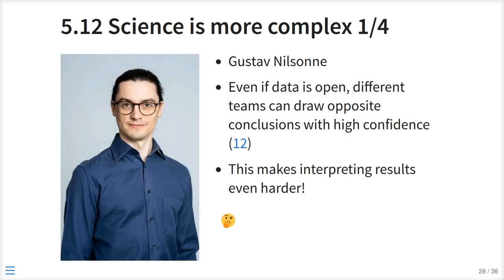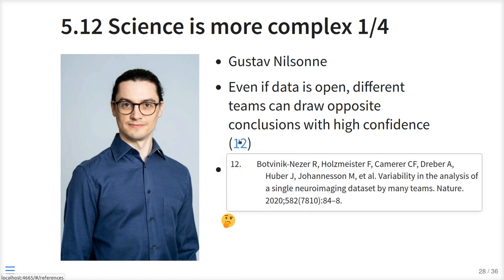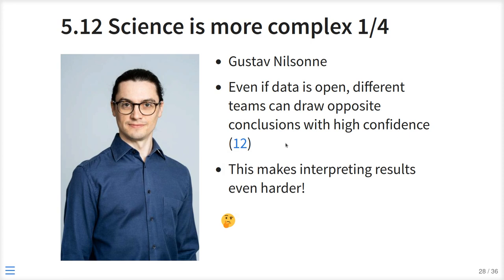The most interesting thing I learned at Open Science Uppsala is from Gustav Nilsson, the first speaker of our group. He's mostly known for his work at OSF, the Open Science Foundation, and he's involved in badges — making open science more visible by allowing badges on researchers and papers for reproducibility and other things. He showed me a paper proving that even when the data is open, different teams can draw opposite conclusions with high confidence. This proves to me that science is even more complex than I thought. We may not be ready for it, and we can only discover this complexity by doing open science.